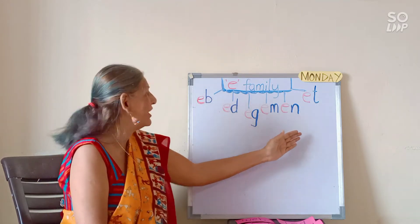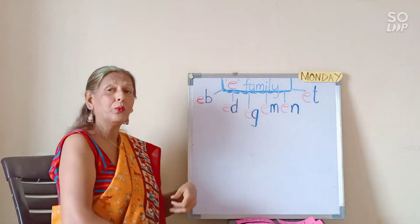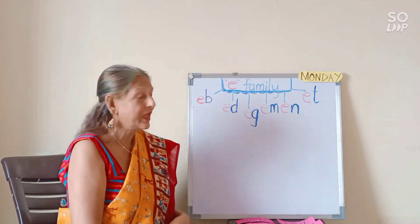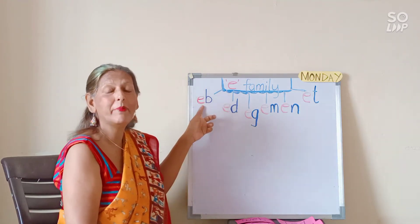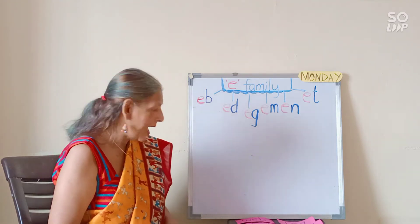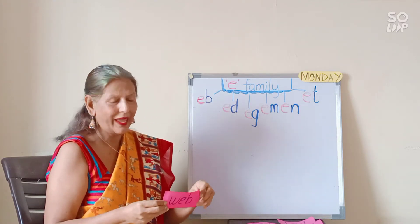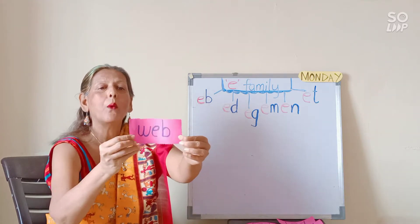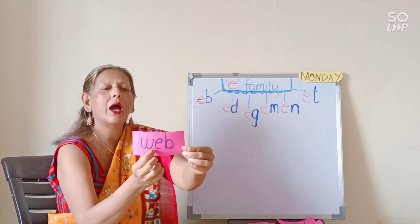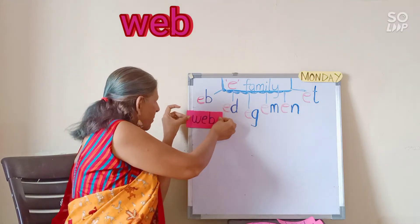Today we are going to cover two E families. The first one is the EB family. I have one word for you with the EB sound — and that is 'web': W, E, B — Web. Very correct. Yes, web.